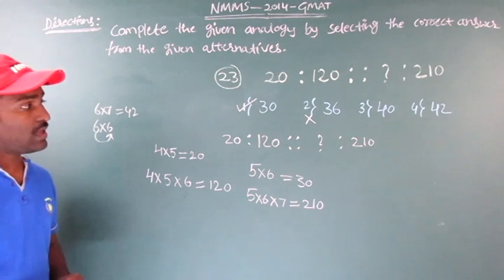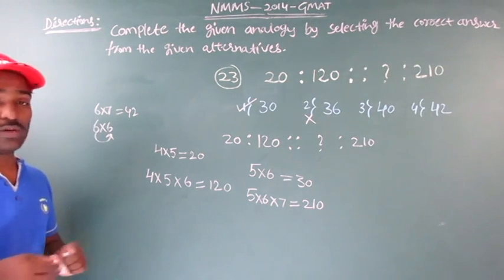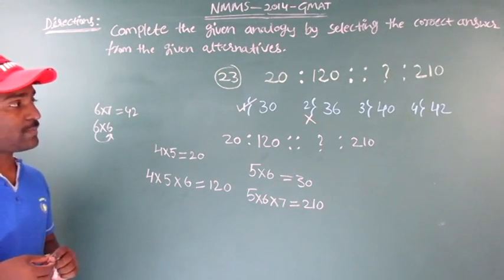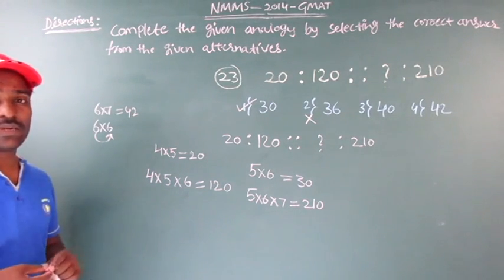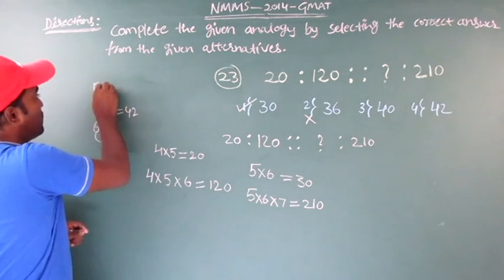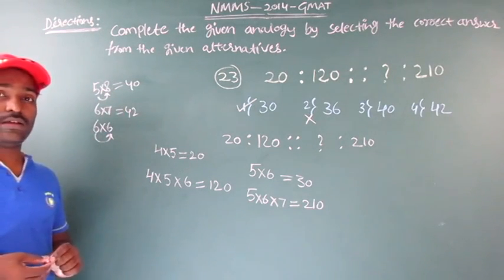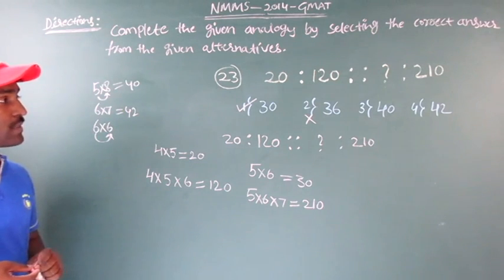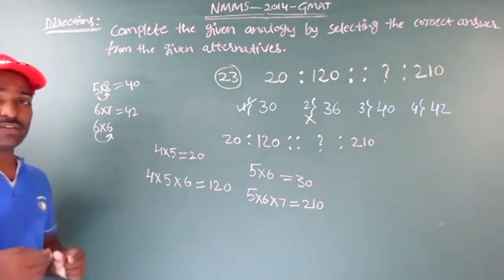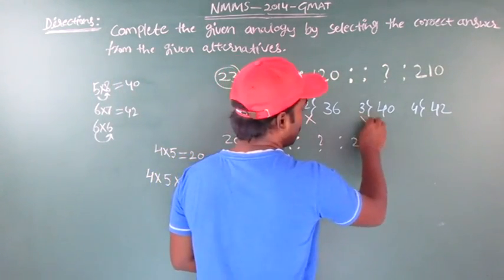Moving to the third option — the number 40. Can we write 40 as a product of two consecutive numbers? 40 can be written as 5 into 8, but 5 and 8 are not consecutive numbers. Even 4 into 10 equals 40, but 4 and 10 are not consecutive numbers. So I can't write 40 using two consecutive numbers, and the third option is also wrong.